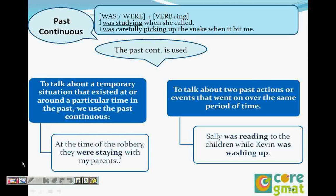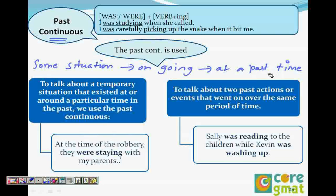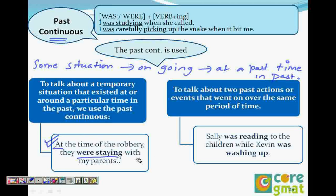Then comes past continuous. At a particular point of time in the past, something was ongoing — it's not ongoing now, but at that point in the past it was. So we say: 'At the time of the robbery, they were staying with my parents.' They don't generally stay with my parents, but at that particular time they were staying. We didn't say 'they stayed,' because 'stayed' would mean simple past — so that would be wrong here.